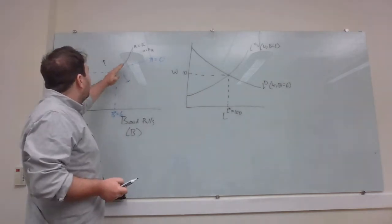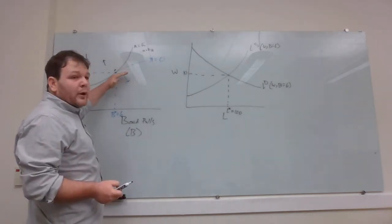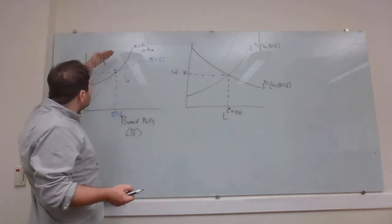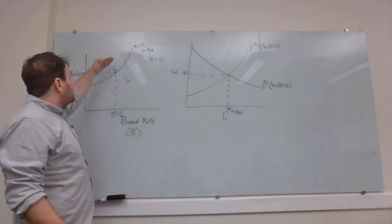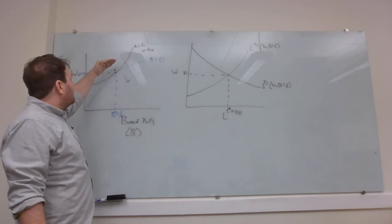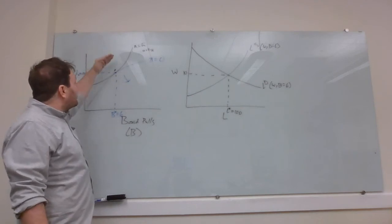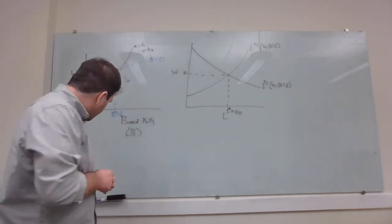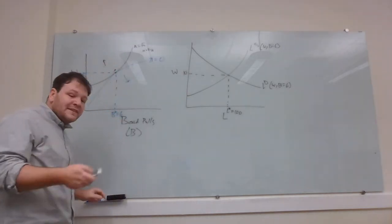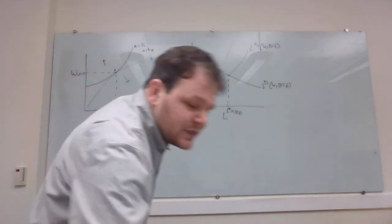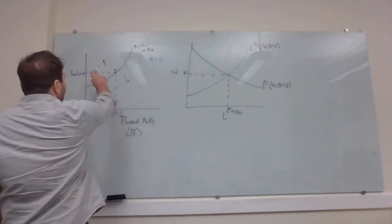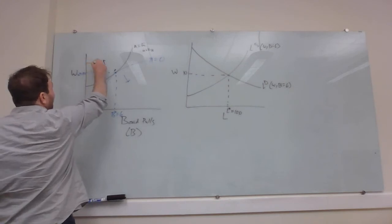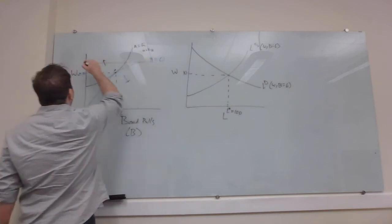If we moved in one direction we would have fewer workers and more firms — a labor shortage. If we moved in the other direction we would have more workers than firms — a labor surplus. So given all that, let's think about how this changes when we introduce a minimum wage. Let's say we had an equilibrium wage of 10 and then we introduce a minimum wage of 12.